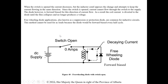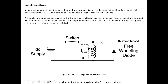These are also known as suppression or protection diodes. They're common for inductive circuits. This method cannot be used for AC loads because the diode would be forward biased every half cycle, so this scenario is DC supply only.